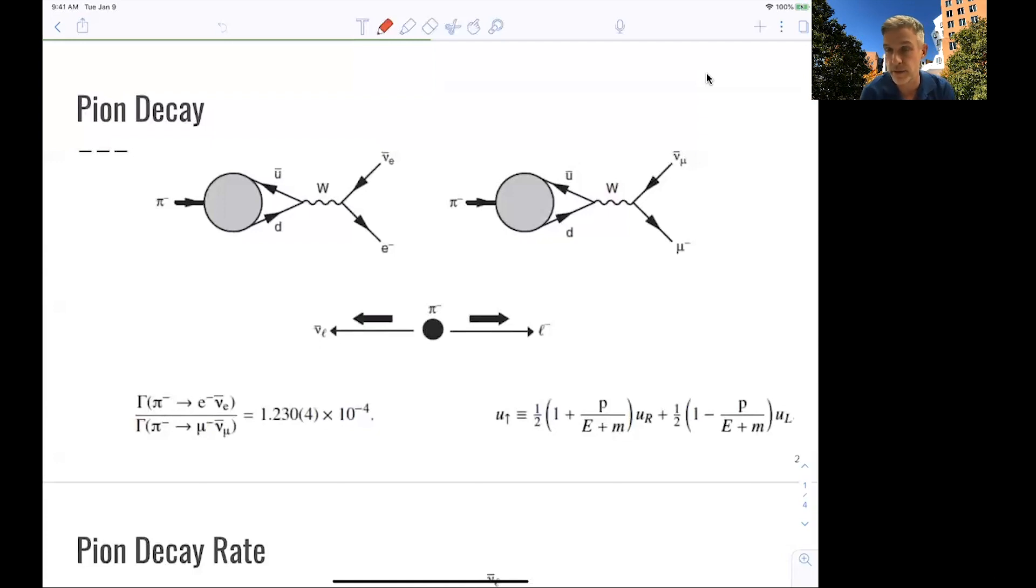But the charged lepton is massive. If the charged lepton would be massless, the decay would not be allowed. There would not be a right-handed helicity state for a charged lepton. Now, this causes quite some confusion. And I've seen, even in this course, some students being confused by this.